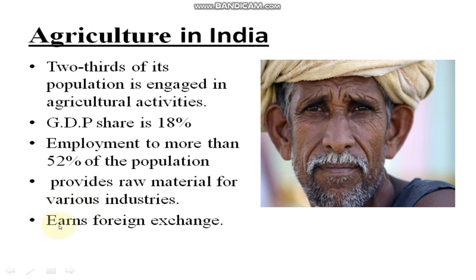Agriculture provides raw material for industries like biscuits, bread, sugar, and cotton — all these industries depend on agriculture. Fifth, it earns foreign exchange — India exports many agricultural products like tea to foreign countries and earns in dollars. Currently the dollar exchange rate is around 75–76 rupees, so this income is very significant.